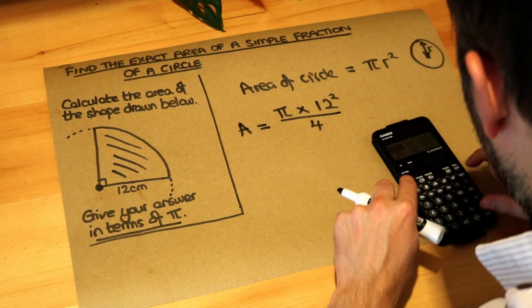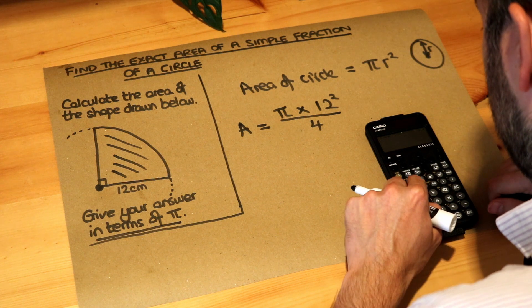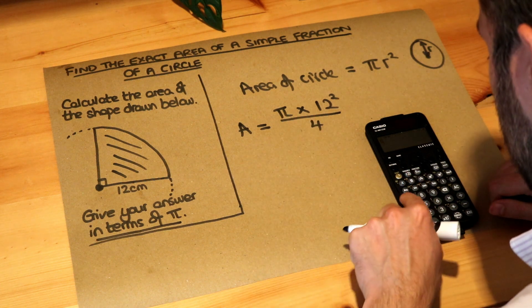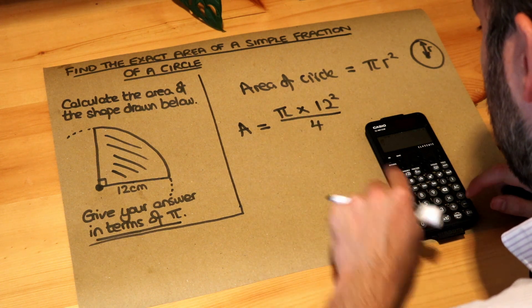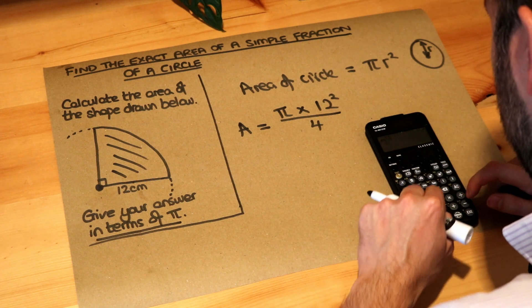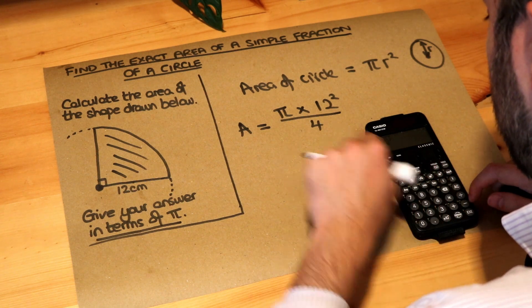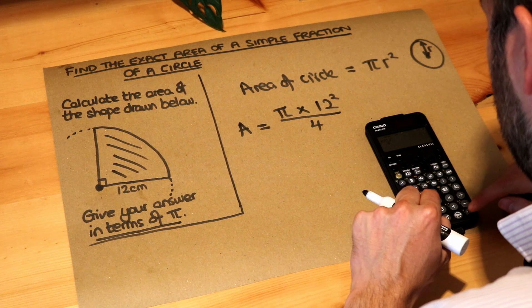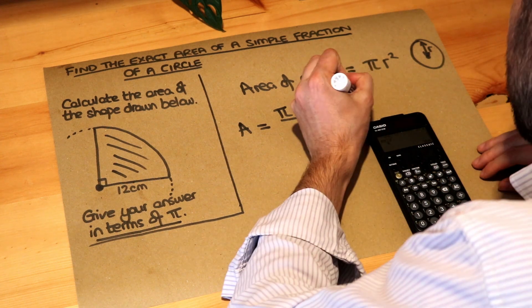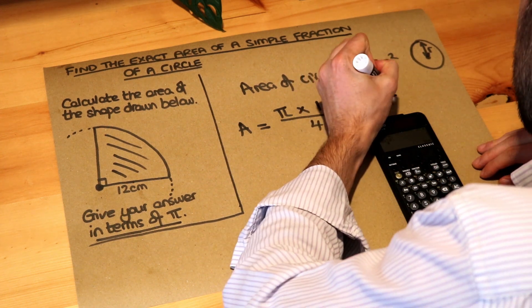So if I do that on my calculator, I'm going to press the fraction button, and then do pi, which I can get using shift, shift pi, multiply by 12 squared, and do that over 4, press equals. And now my calculator is telling me 36 pi.